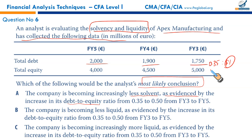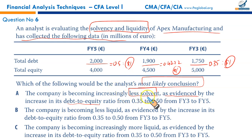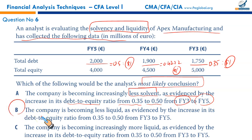The debt-to-equity ratio rises from 0.35 to 0.50 from FY3 to FY5, confirming declining solvency. Liquidity cannot be calculated from just debt and equity data, so options B and C are wrong. A is the right answer. Regarding the most reasonable explanation of this data: equity could be declining because of losses, because the company purchased its own stock as treasury stock, or because dividends paid exceeded earnings — or a combination of these reasons.